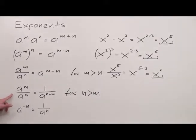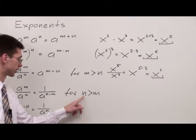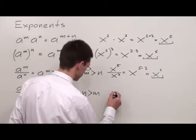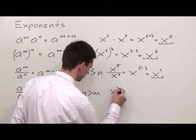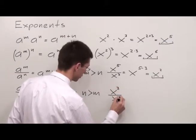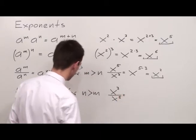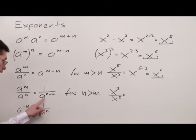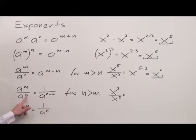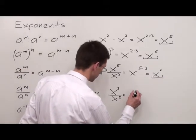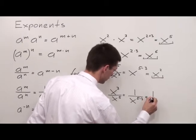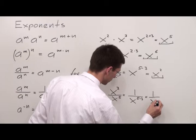Another condition is when we have the exponent in the denominator greater than the exponent in the numerator. For example, x to the third power in the numerator and x to the fifth power in the denominator. According to the rule, if the base is the same, I keep the base but it has to be placed in the denominator, and I subtract exponents starting from the bottom one. In other words, my answer is 1 over x to the 5 minus 3, which gives 1 over x to the second power.